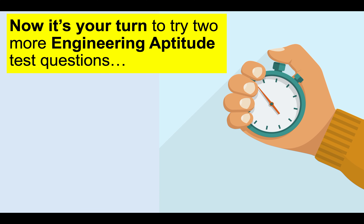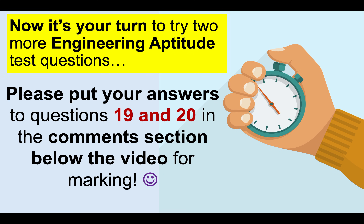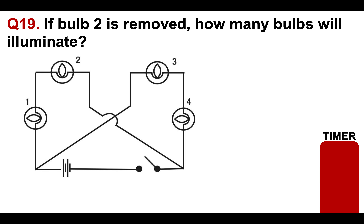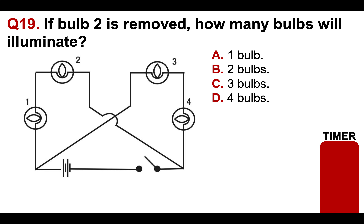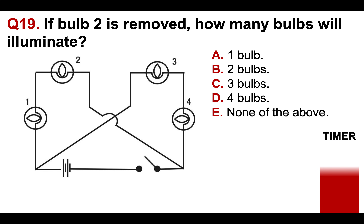Now it's your turn again to try two more engineering aptitude test questions. Please put your answers to questions 19 and 20 in the comments section below the video. Question 19: if bulb two is removed, how many bulbs will illuminate? A: one bulb, B: two bulbs, C: three bulbs, D: four bulbs, or E: none of the above. Put your answer to question 19 in the comments section below — and don't get caught out, it's a bit of a tricky question.